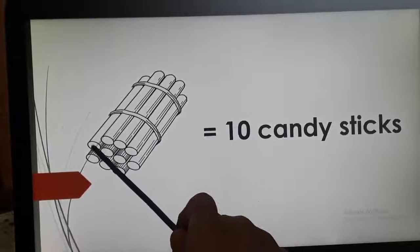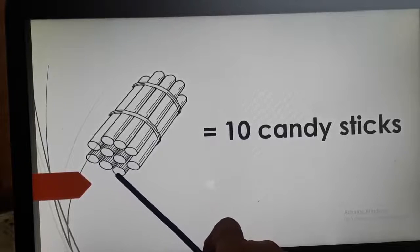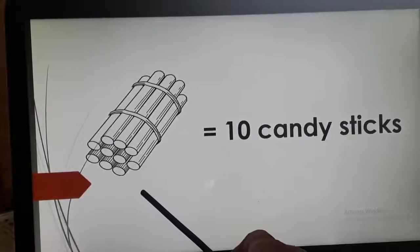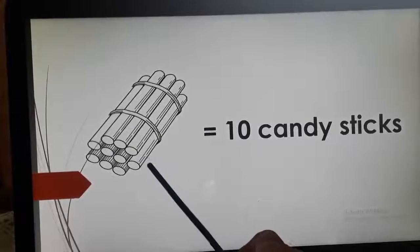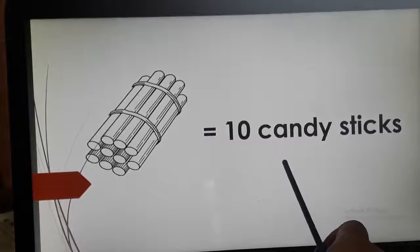4, 5, 6, 7, 8, 9 and 10. You can see a bundle of 10 candy sticks. So, that means 1 bundle is equal to 10 candy sticks. Right?